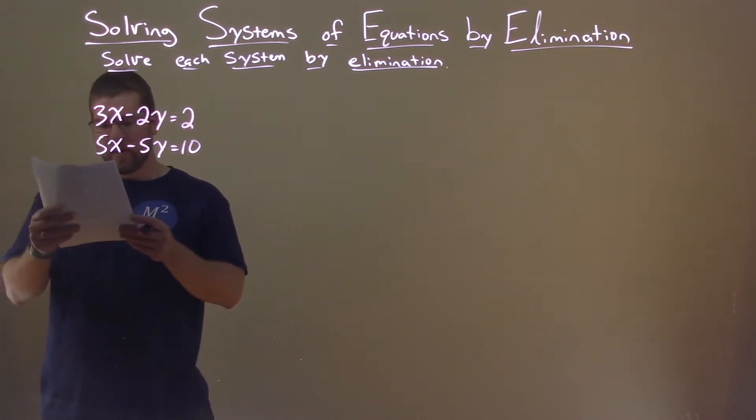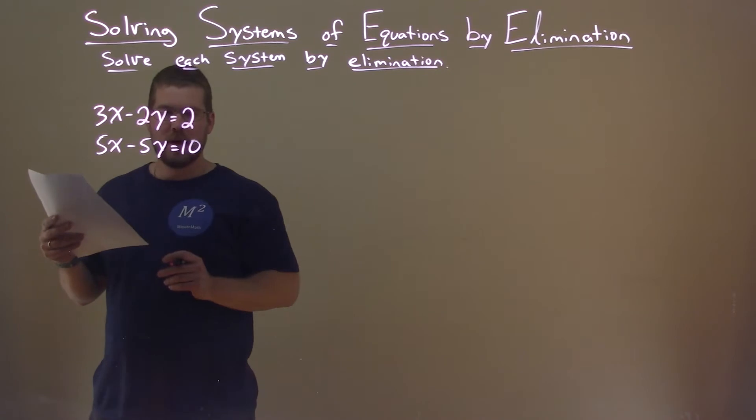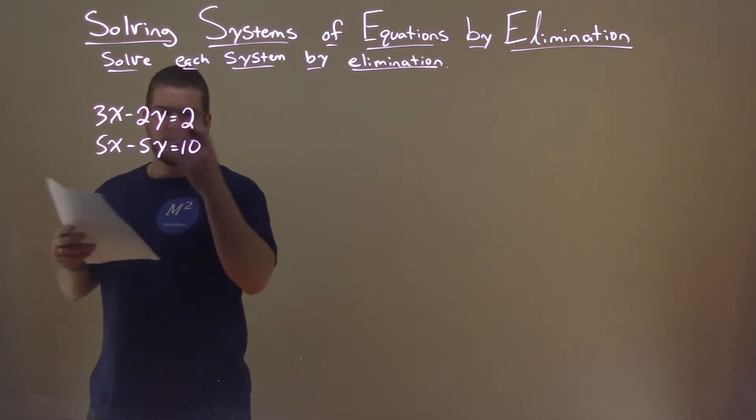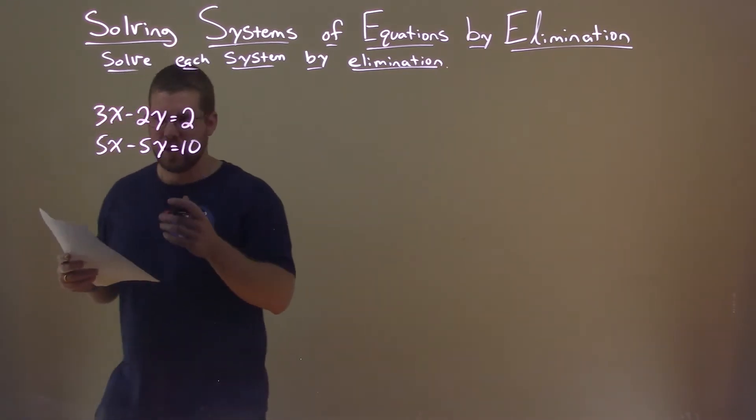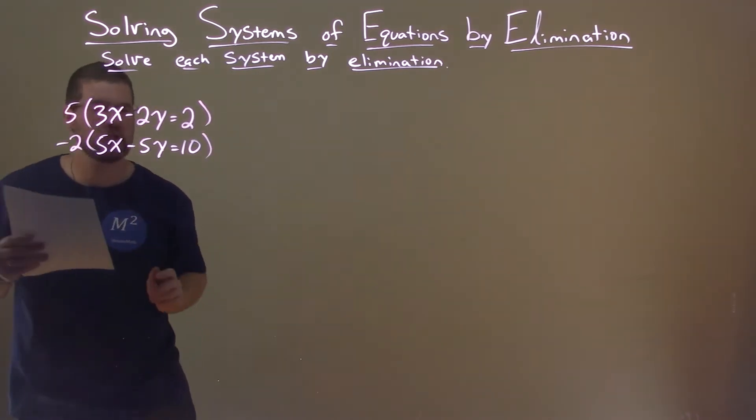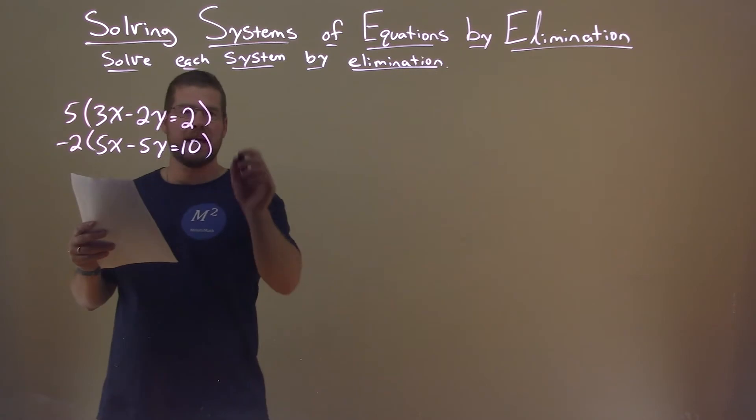Let's make our goal here to eliminate the y values. 5 times 2 is 10, 2 times 5 is 10, so we can do some adaptation there. Let's take our numerator and multiply it by a positive 5, our denominator by negative 2 here, and let's see what happens.